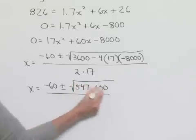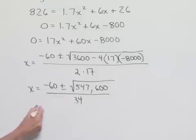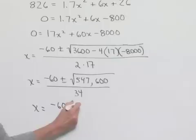Divided by 2 times 17, which is 34. Now, it turns out that this is a perfect square, and that value is going to be 740.